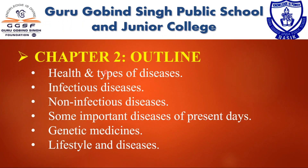In chapter 2, we learned about health and types of diseases according to duration and causes. Some infectious diseases like diarrhea, TB, cholera, and typhoid, and some non-infectious diseases like cancer, diabetes, and heart diseases. Current important diseases like dengue, swine flu, and AIDS were also covered. Then we got familiar with genetic medicines and learned that a wrong lifestyle increases the frequency of ill health and episodes of diseases.